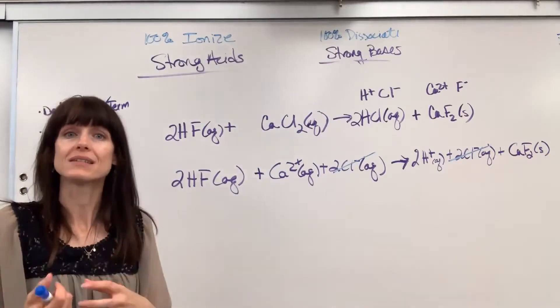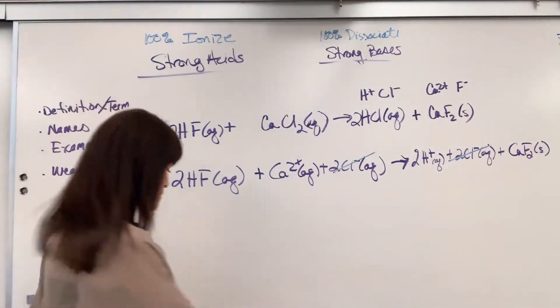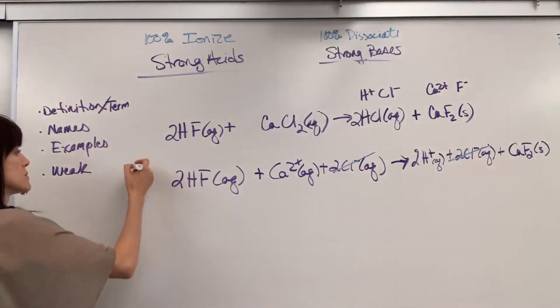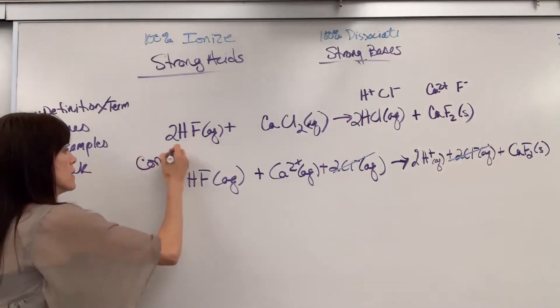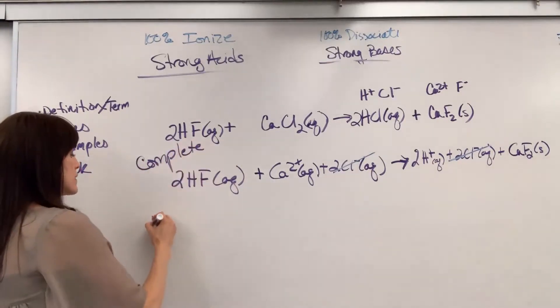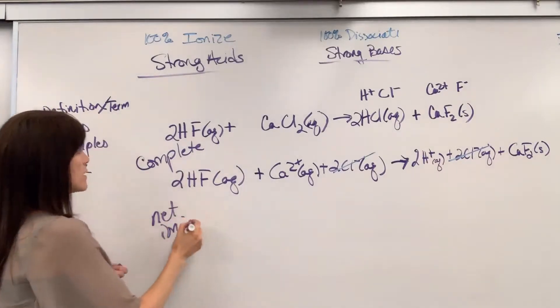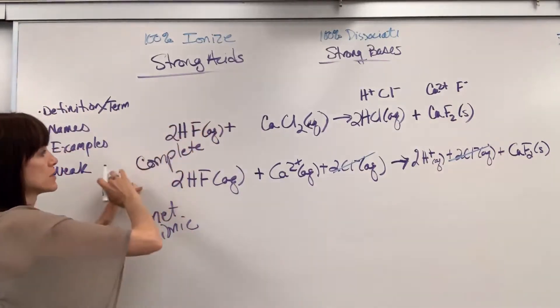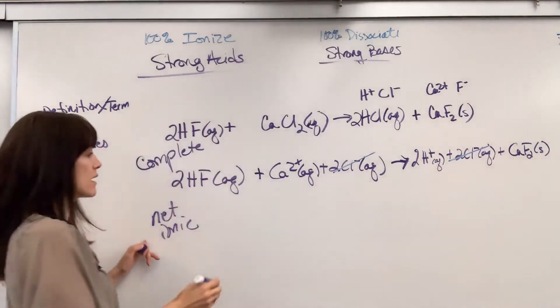So to write the complete, or excuse me, the net ionic, let's put a note. This was the complete, and this is going to be the net ionic. So here's the balanced chemical reaction, complete ionic, now I've got my net ionic.